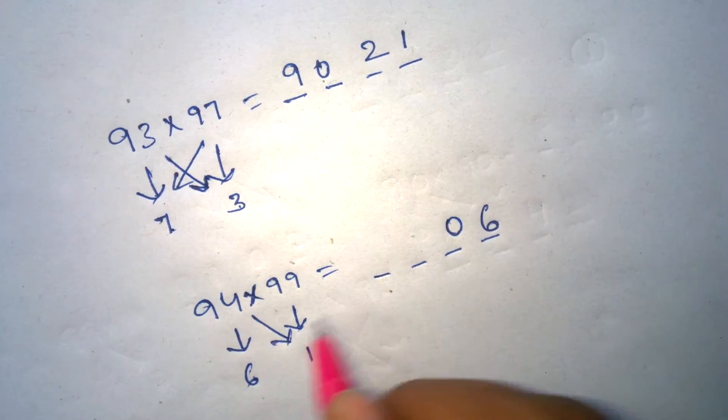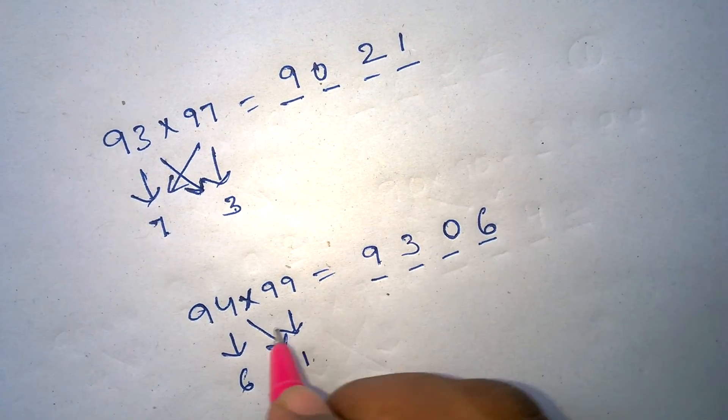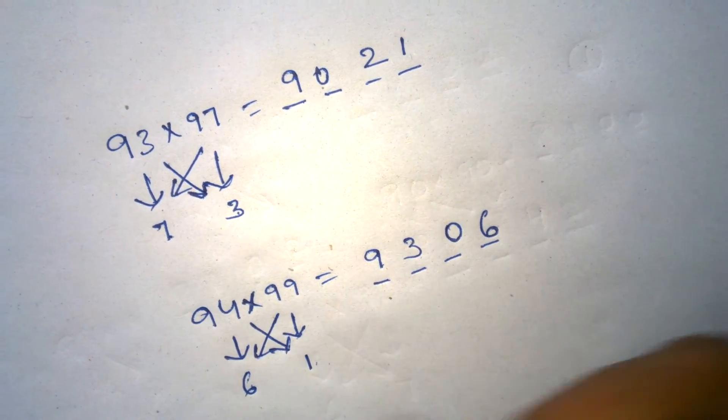94 minus 1 is 93, or 99 minus 6 is the same.